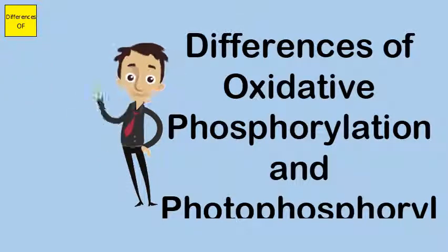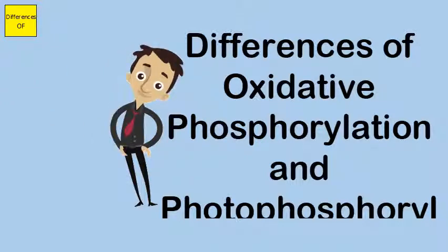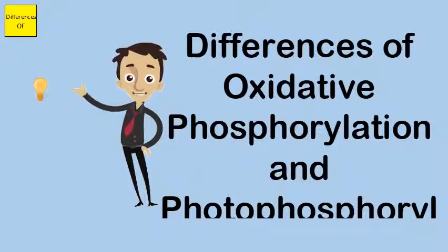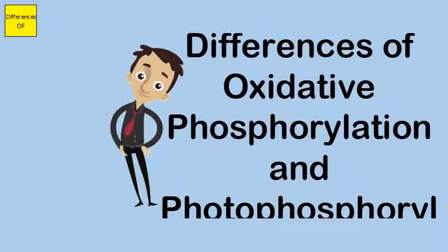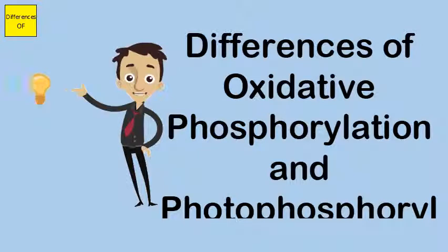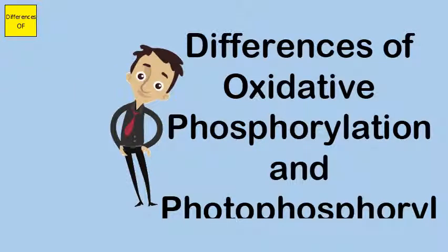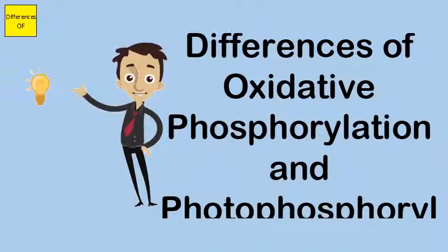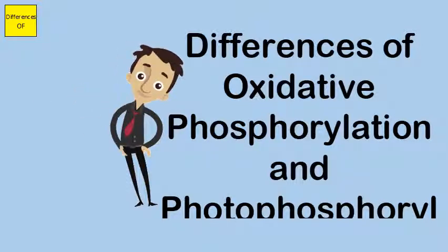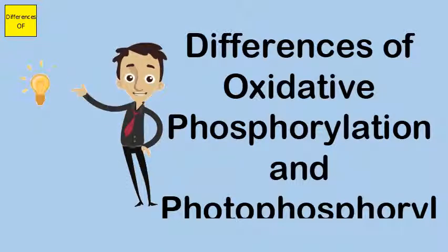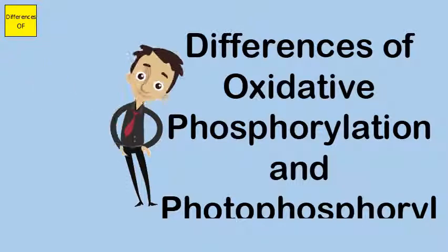In oxidative phosphorylation, ATP is produced from ADP and inorganic phosphate by utilizing energy released during electron transport. In photophosphorylation, sunlight is the external energy source.